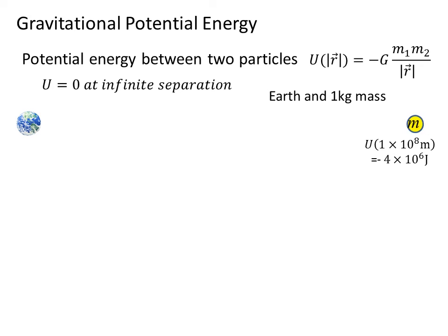Then if we bring the mass a little closer, one times ten to the eighth meters, the potential energy is minus four times ten to the sixth joules. So that's minus four million joules.